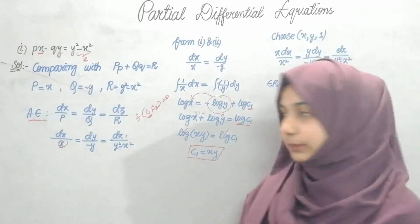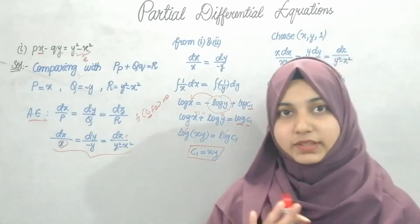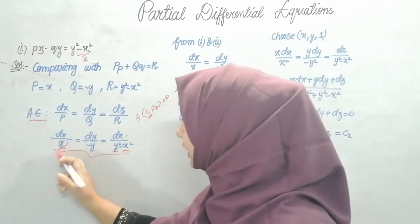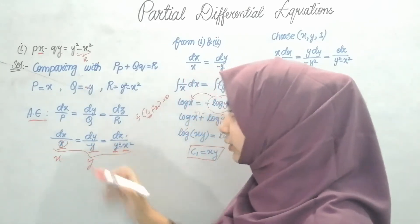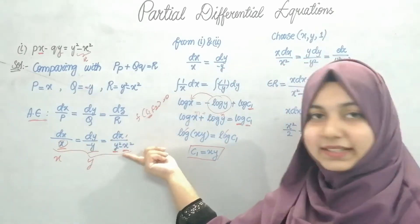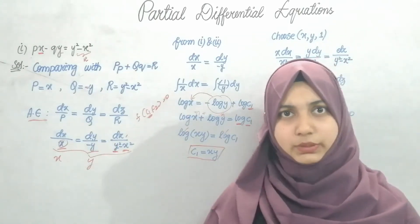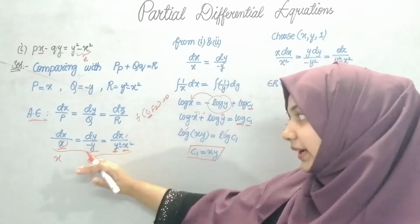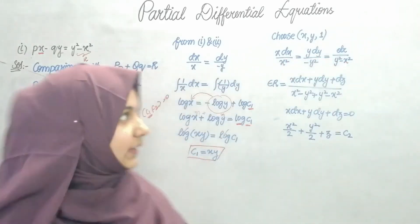Let's see what to multiply. In the denominators, I have x, minus y, and y squared minus x squared. There's no z term. I notice I have x squared and y squared in R. So I'll multiply the first term by x and the second term by y: x times x gives x squared, and y times y gives y squared. I'll keep the third term as is, multiplying by 1.